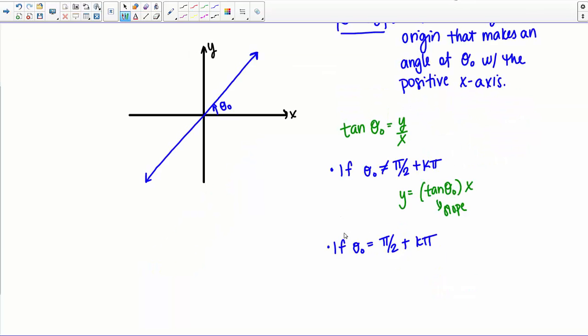Now in the case that theta naught does equal pi over 2 plus K pi, we know that the tangent of that angle is undefined, which means this denominator X is going to be 0. So in this case then, we're going to just have X equals 0, which would be a vertical line through the origin.